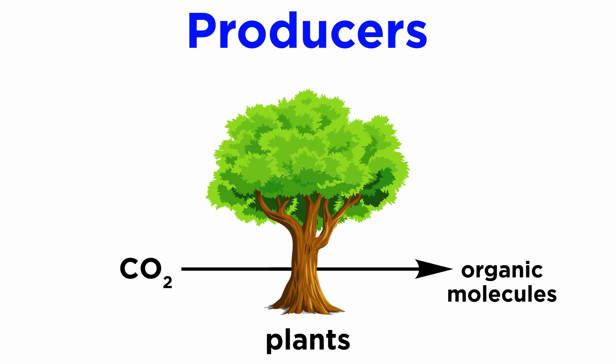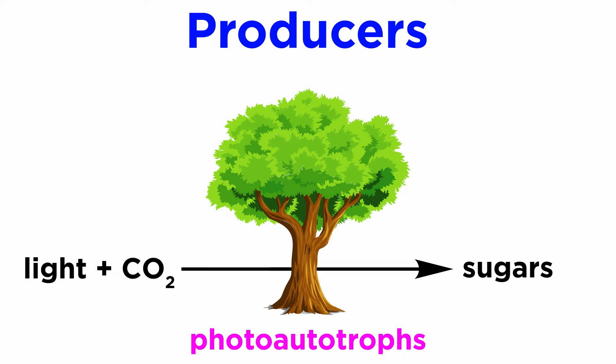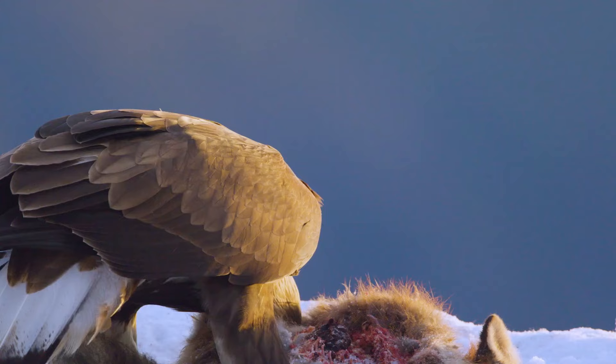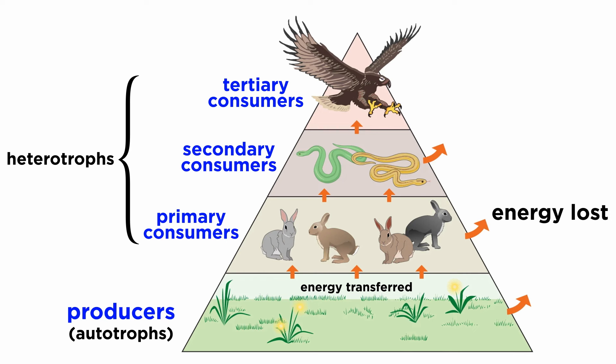These organisms make their own organic molecules from carbon dioxide. Photoautotrophs, like plants, use light energy to build sugars out of carbon dioxide. The energy is stored by virtue of the chemical bonds of the molecules, which are used as fuel and building material by the plant. The energy that can be released through the metabolism of organic molecules is passed to other organisms in the ecosystem when those organisms eat plants, or eat other organisms that have previously eaten plants.